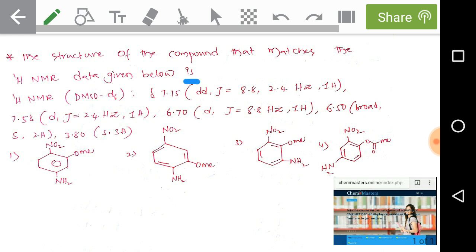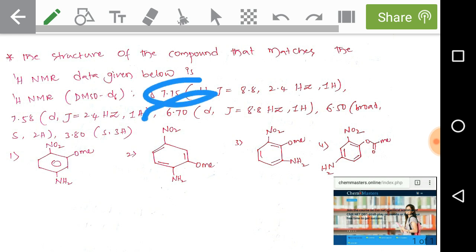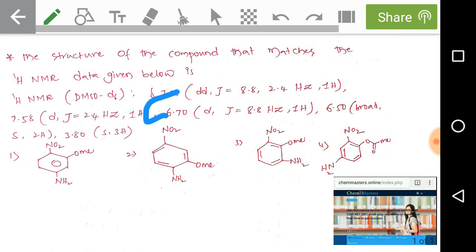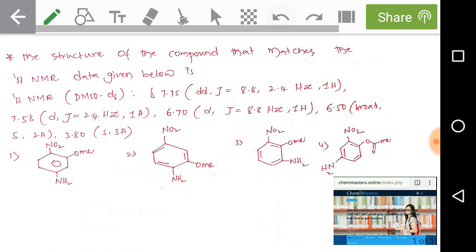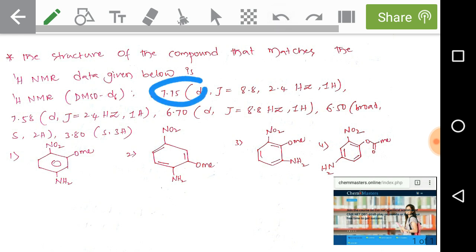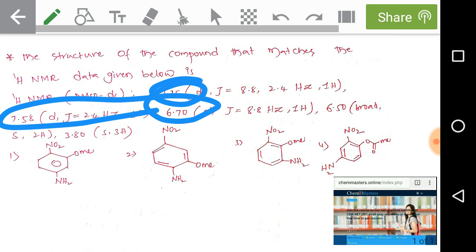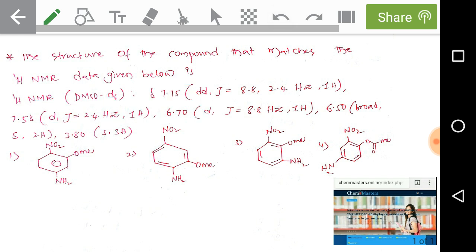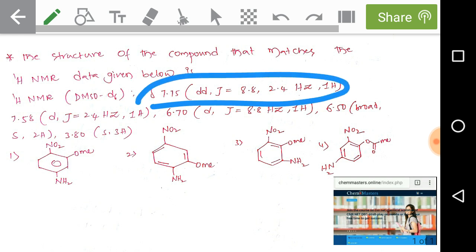Now we need to look at the other delta values: 7.75, 7.58, and 6.70. These simply indicate the presence of a benzene ring. The presence of the benzene ring is indicated by these delta values. Here we need to look at the double doublet — at 7.75 chemical shift value a double doublet is present.